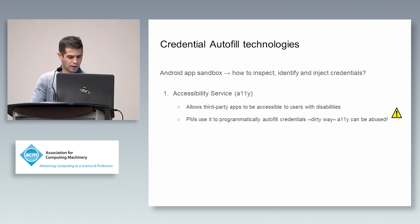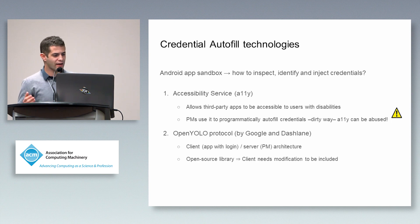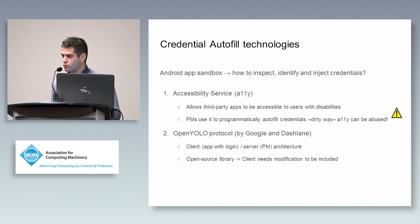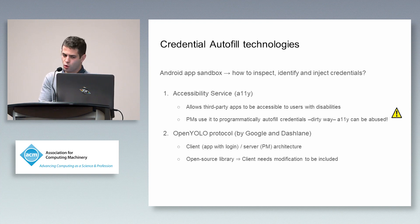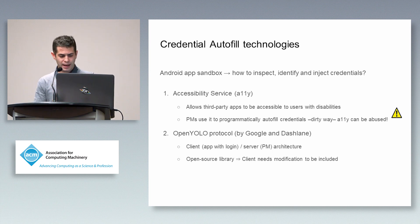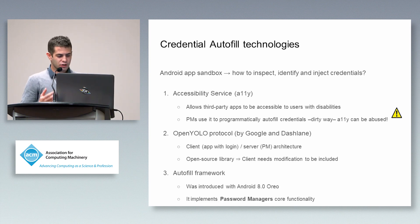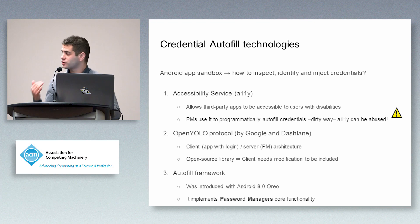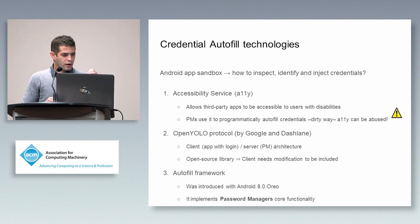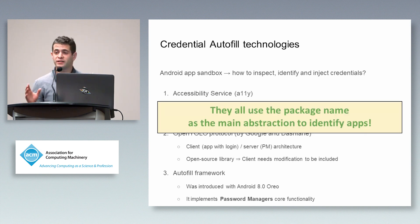Google is trying to move away from the accessibility service, and they developed a protocol named OpenYolo in collaboration with Dashlane. This is a client-server architecture where the Android application with the login form is the client and the password manager is the server. It is distributed as an open source library, so the client needs a modification to be included. The last technology is the autofill framework, introduced in Android 8, which implements the core functionality of password managers as a normal Android service. These technologies are different, but they have something in common: they all use the package name to identify the Android application.